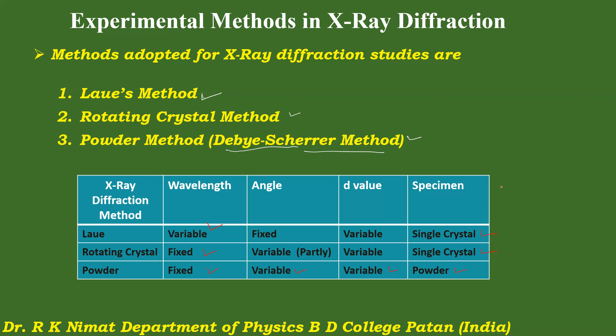This table clearly indicates which parameter is fixed and which is varied in these three types of diffraction methods. This was just an overview of the experimental methods in X-ray diffraction. In the next lectures, we will discuss each of the three X-ray diffraction methods one by one in detail.